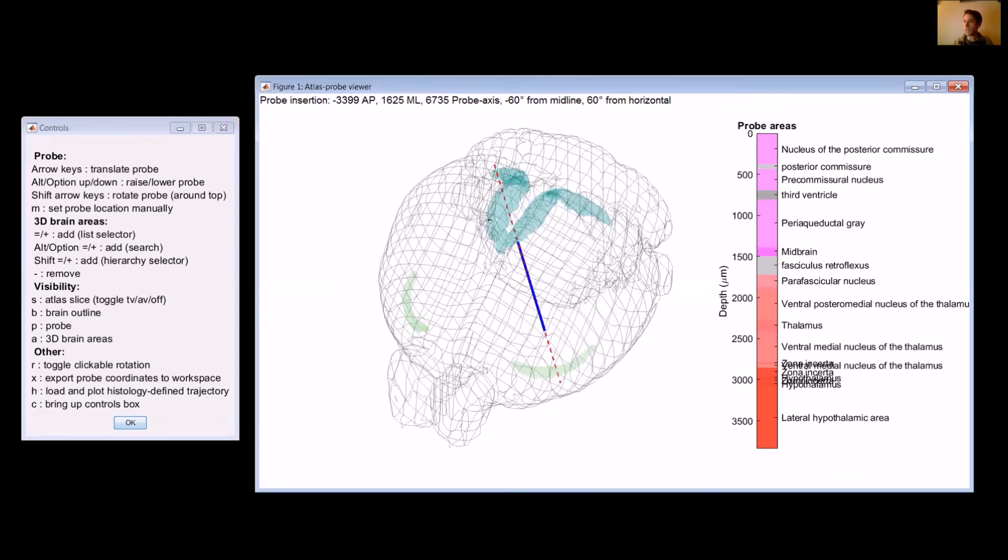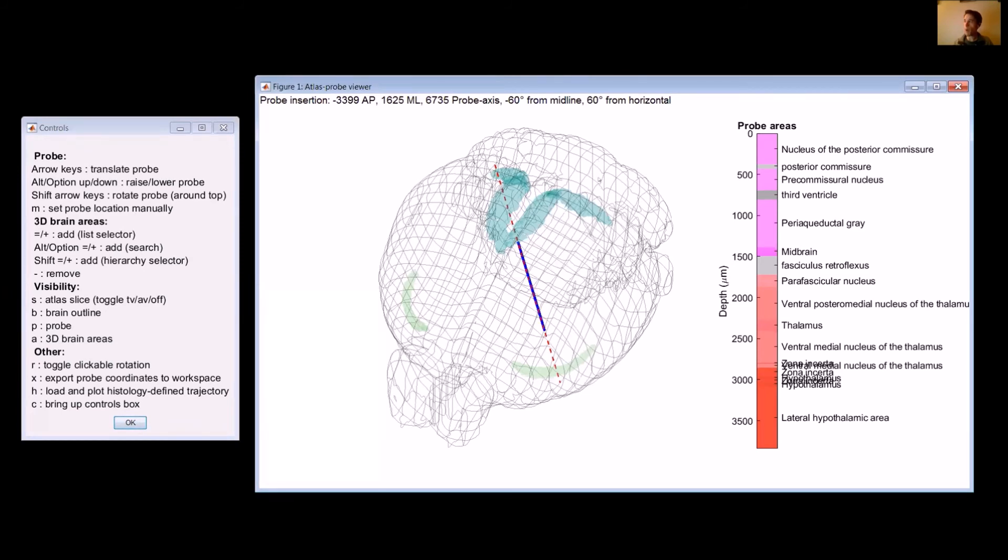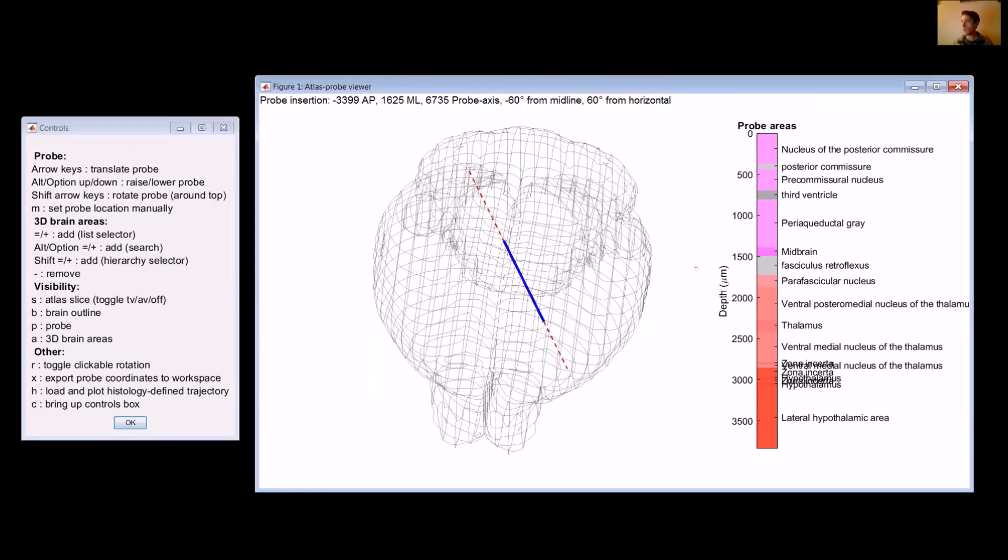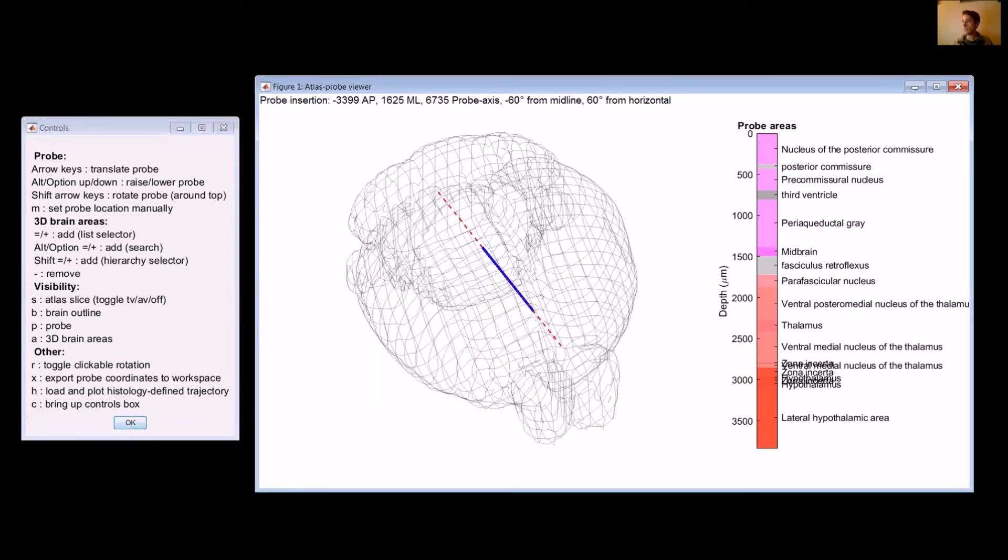If you want to remove, then you hit the minus key. So you'll hit minus. It'll bring up all of the things that are currently plotted. You can select all, and then it gets rid of those things.